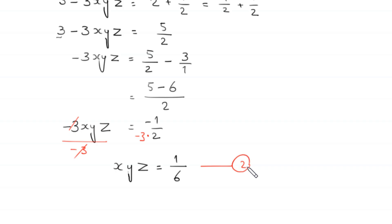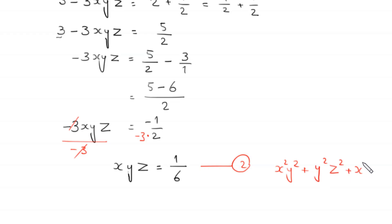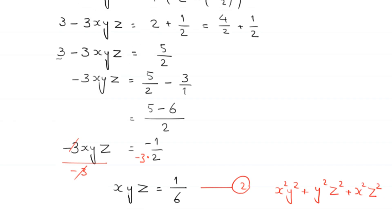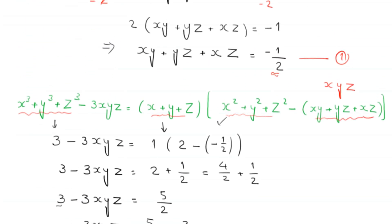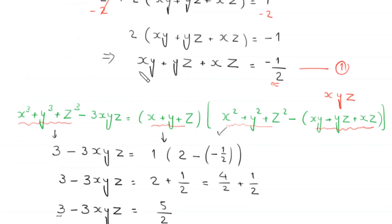Now we find the value of x squared y squared plus y squared z squared plus x squared z squared. For this, we square both sides of equation 1, which is xy plus yz plus xz equals negative 1 over 2.